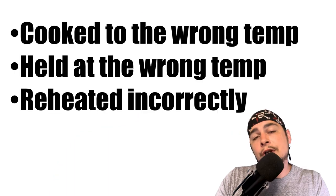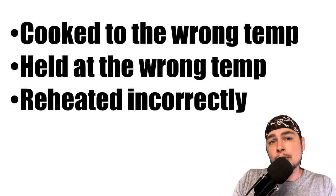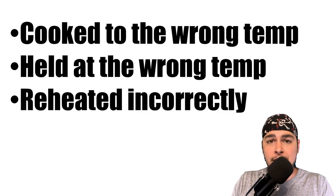What are the three main causes for time and temperature abuse? Cooked to the wrong internal temperature, held at the wrong temperature, or cooled and reheated incorrectly. How do you know if time and temperature abuse has even happened? Well, the temperature danger zone is your best friend. Most pathogens grow the fastest between 70 and 125 degrees — that's the red-alert zone within the general danger zone of 40 to 140.